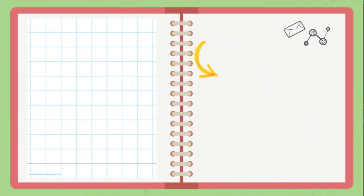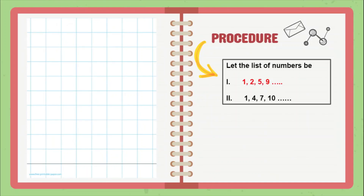So let us start with the procedure. For this activity we will consider two lists of numbers. The first list is 1, 2, 5, 9 and the second list is 1, 4, 7, 10. We will represent the first list on the squared paper.